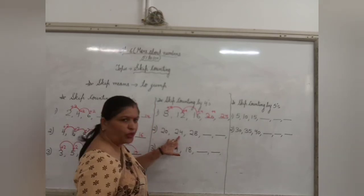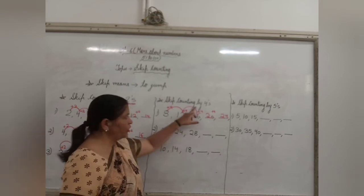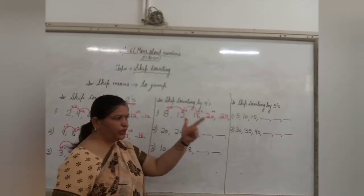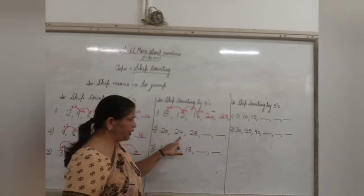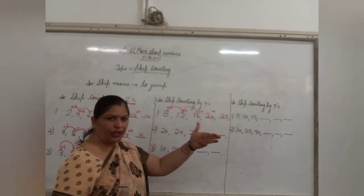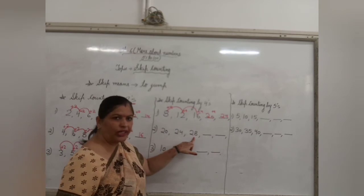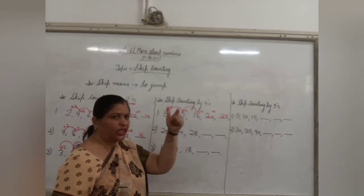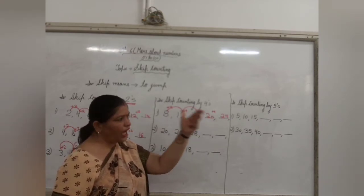Second question, 20. After 20, 24. 4th number will jump. 21, 22, 23, 24. 24 is there. After 24, 25, 26, 27, 28 is there. After 28 count 4. 29, 30, 31 and 32.